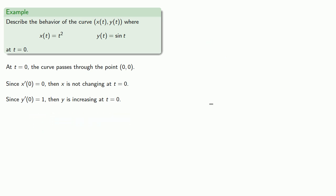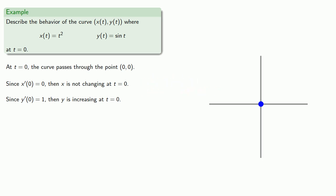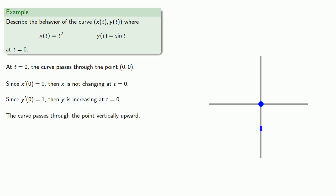Let's picture this. At t equals zero, the curve goes through the point (0, 0). As it's going through that point, the x-coordinate is not changing — we're not increasing so we're not going to the right, and we're not decreasing so we're not going to the left. On the other hand, the y-coordinate is increasing, and so that means the curve passes through this point going vertically upward.